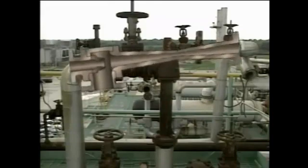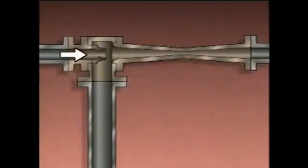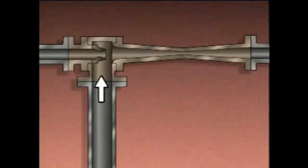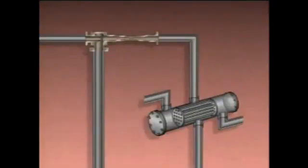A steam jet air ejector consists of a steam inlet, a nozzle, a suction port, and a combining tube. Normally, the combining tube is connected directly to a small condenser called an air ejector condenser.